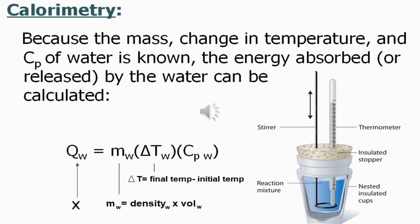The specific heat is a physical property of matter that establishes the amount of heat in joules required to increase the temperature of a substance by one degree Celsius. In the case of water, it takes 4.184 joules of energy to raise the temperature of one gram of water by one degree Celsius.